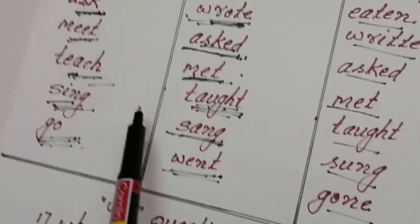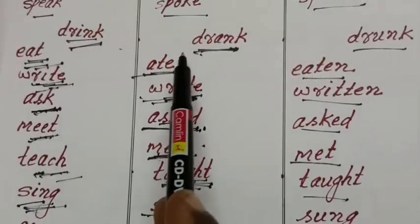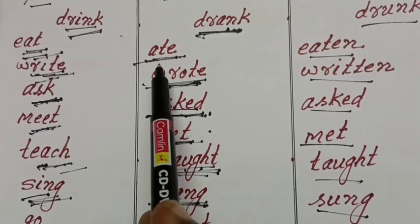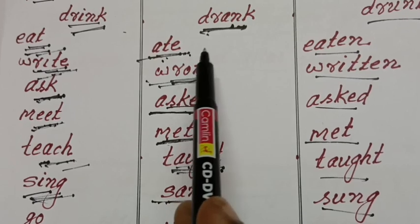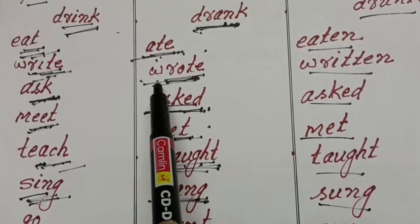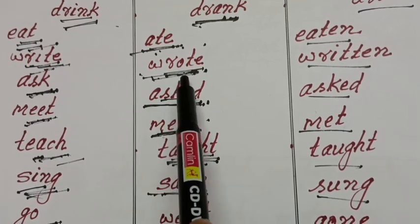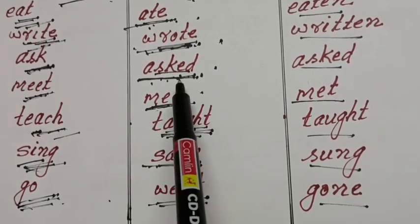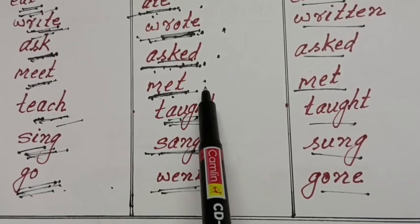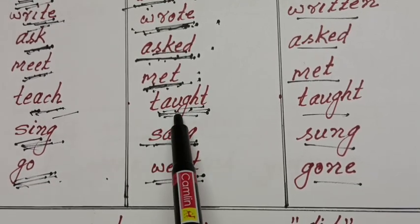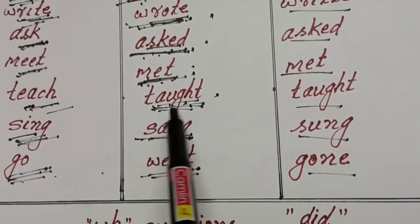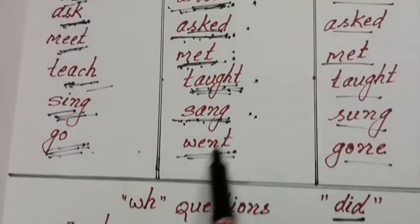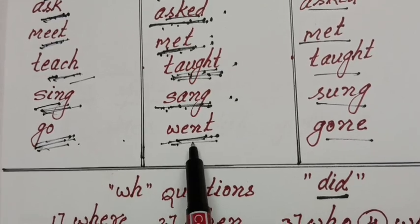Here I am telling about the second form. Who drank water on the road? My brother drank water on the road. Who ate in the hotel? Your sister ate in the hotel. Who wrote the examination? Their friends wrote the examination. Who asked a question to your friend? Their friends asked the question. Who met my father? They met my father. Who taught Telugu on the road? I taught Telugu on the road. Who sang in Mumbai? Lata Mangeshkar sang in Mumbai. Who went to Delhi? Our friends went to Delhi.